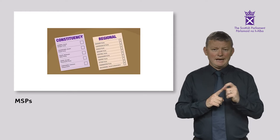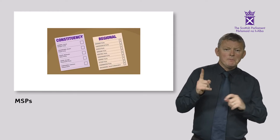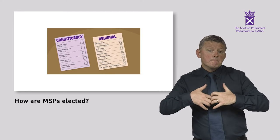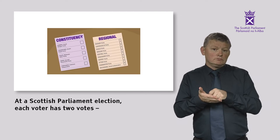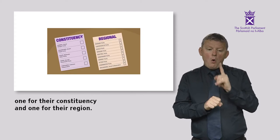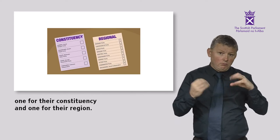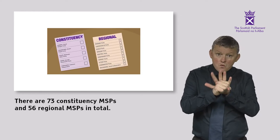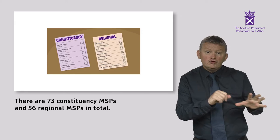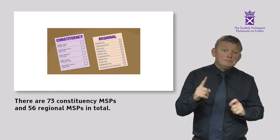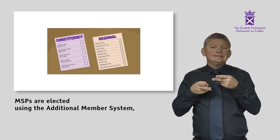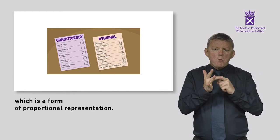MSPs — how are MSPs elected? At a Scottish Parliament election, each voter has two votes: one for their constituency and one for their region. There are 73 constituency MSPs and 56 regional MSPs in total. MSPs are elected using the Additional Member System, which is a form of proportional representation.